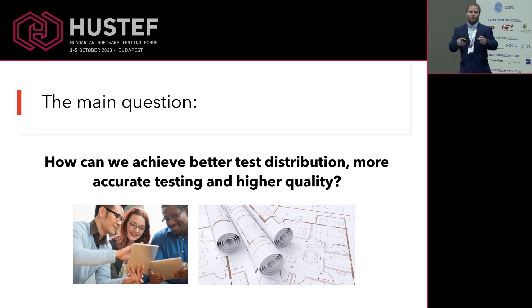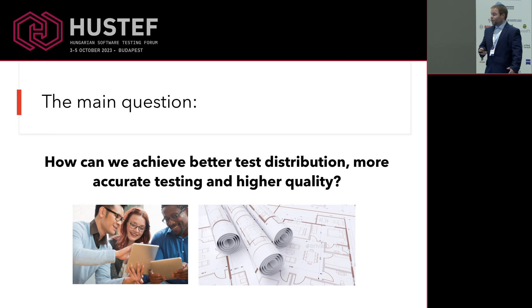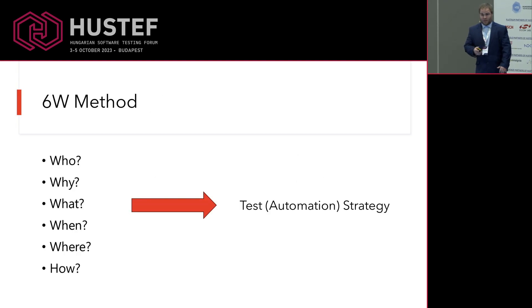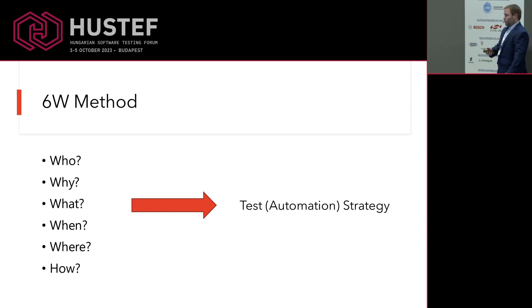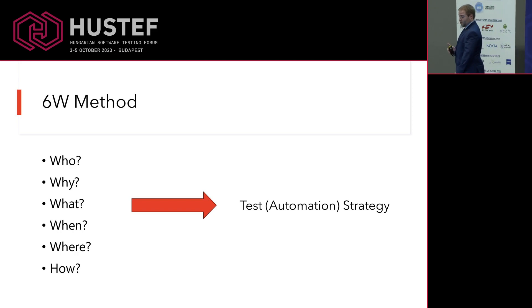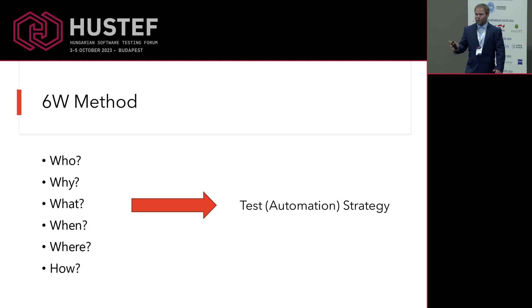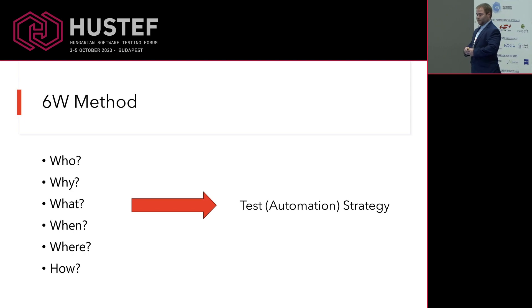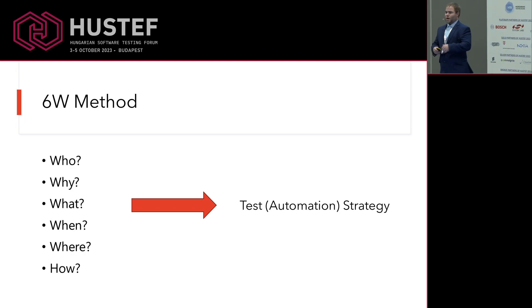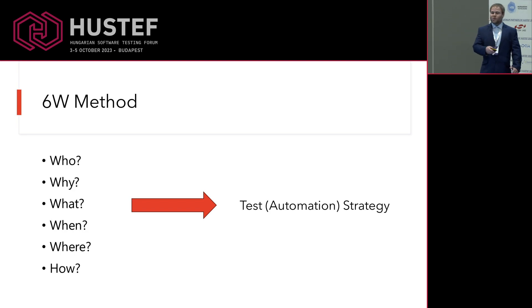If we have a common understanding on the goals, we can have better customer satisfaction as well, because we know what the customer wants and we can deliver it as it should be. For that, I used the 6W method recently in our daily work with my team. This method is based around six very easy questions. It is very similar to risk-based testing, where you try to mitigate and identify the different risks by creating responsible persons, action plans, and so on.